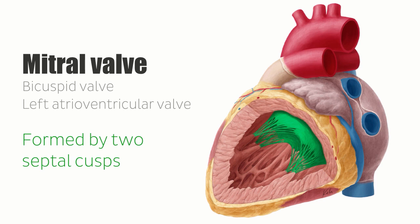The blood supply to the left atrium is governed by the left circumflex coronary artery, and it is drained by the oblique vein of the left atrium, which arises during embryonic development from the left side of the fetal superior vena cava.